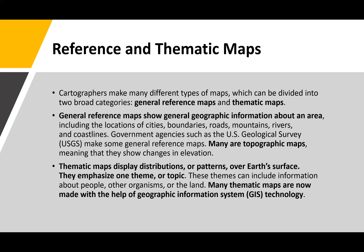General reference maps show general geographic information about an area. You usually see them as road maps, for example. They include the locations of cities, boundaries, roads, mountains, rivers, and coastlines. Government agencies such as USGS make some general reference maps.